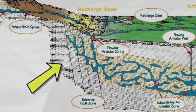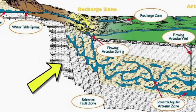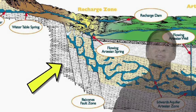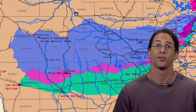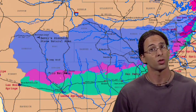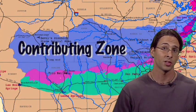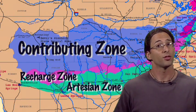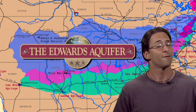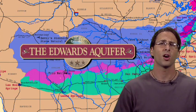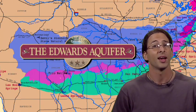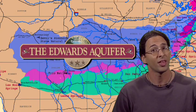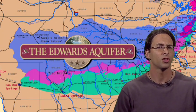I talked about the Edwards Limestone and how the holes in it make our aquifer very special. I want to remind you about the Balcones Fault Zone that we talked about earlier — it is the series of fractures that divide our aquifer into the three zones: the contributing zone, the recharge zone, and the artesian zone. The Balcones Fault Zone helps make our aquifer very unique; no other karst aquifer is quite like ours, and the Balcones Fault Zone is one of the main things that makes the Edwards Aquifer so unique.